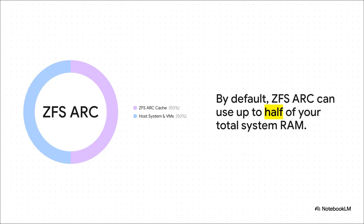Next, the ZFS ARC cache. It's not the primary cause, but it can be a major accomplice. By default, ZFS can decide to use up to half of your total system RAM for its own caching. So if your memory is already super tight because of that KVM bug, a greedy ARC cache can be the final straw that breaks the camel's back.